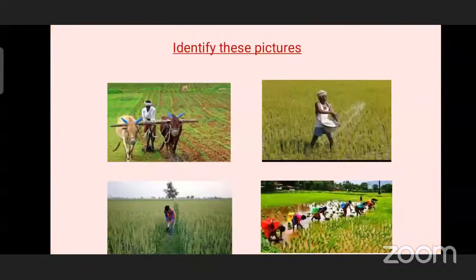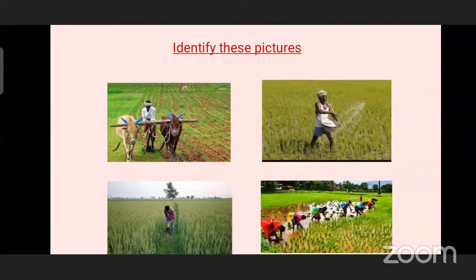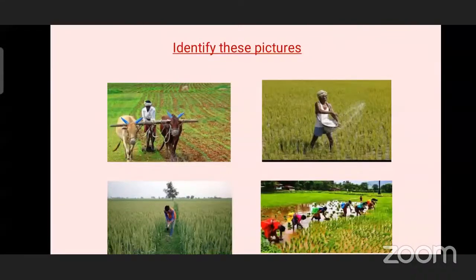So we will see the next slide, how the farmer is working very hard for us. He grows crops for us. Now what all activities he carries out — he is ploughing the land, spreading the seeds, weeding the land, watering the plants so that we will get fresh food. From these pictures, what is this occupation called? Agriculture. Yes, so this is agriculture. These all activities are carried out in agriculture.